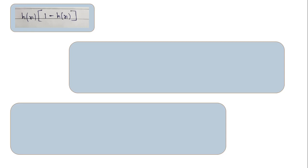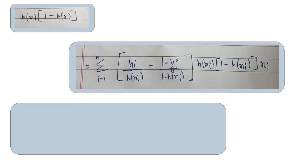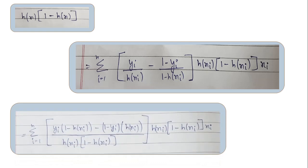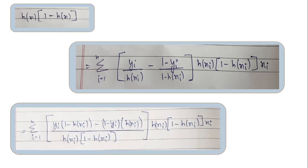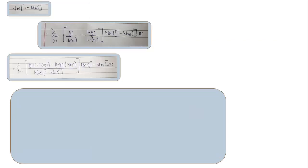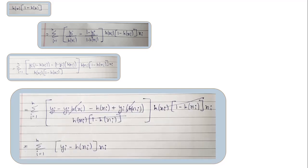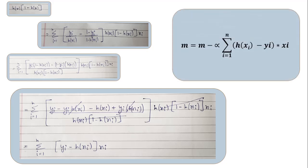Now that we have the derivative of h(x_i), we substitute it back into the equation and expand. By cancelling out terms we get the final m value as (y_i - h(x_i)) * x_i. We can directly put this value into the update rule: m = m - learning_rate * derivative_of_m, to generate the best fit line between the two classes.